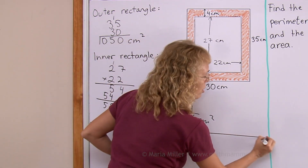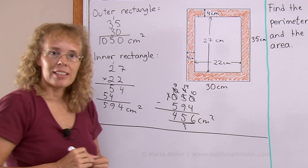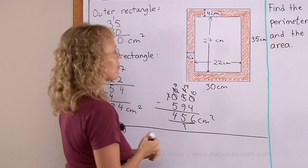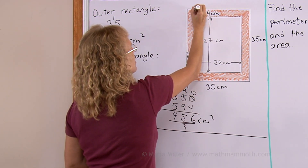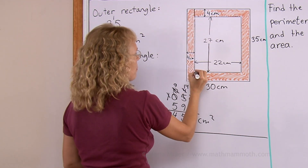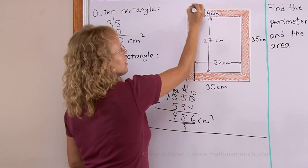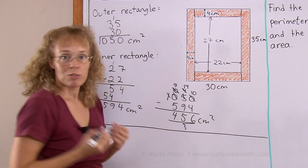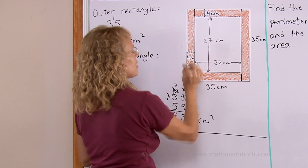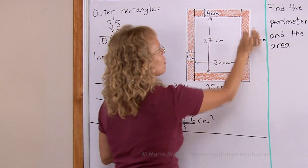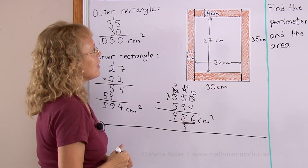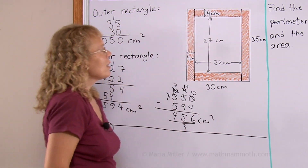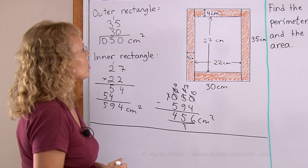I want to show you the other way to solve it too. That is to take this shaded area as a polygon and divide it into rectangles. For example, one way to divide it is this way — now I have four rectangular pieces. Two of those rectangles are identical: these two on the top and bottom, and then these two on the sides are also identical. That speeds up our calculations a little bit.